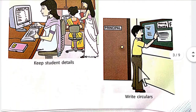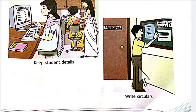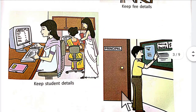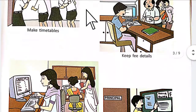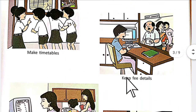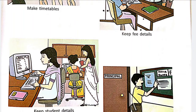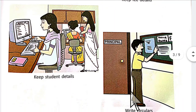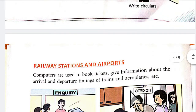Another use in school is to write a circular. If you have a circular to pass, the computer is used for that — to record how many students are available. So in school, the computer is used to make a timetable, manage fees, store student records, and create circulars.